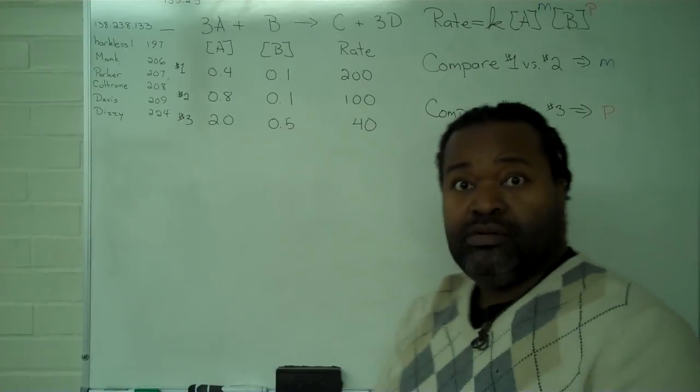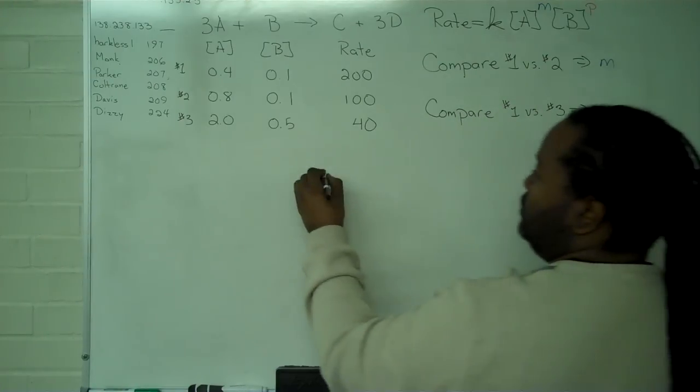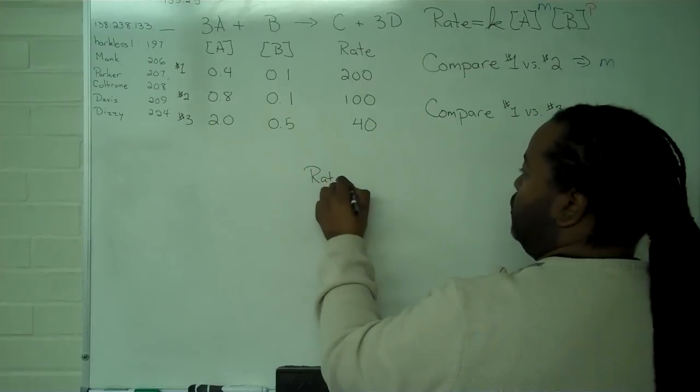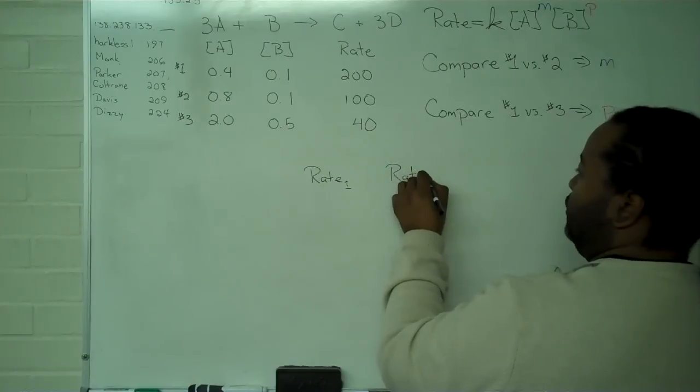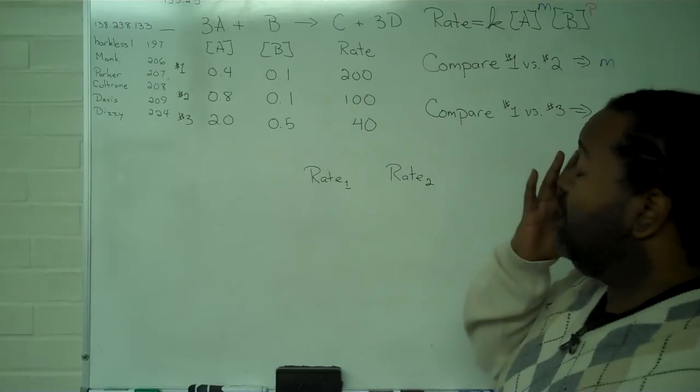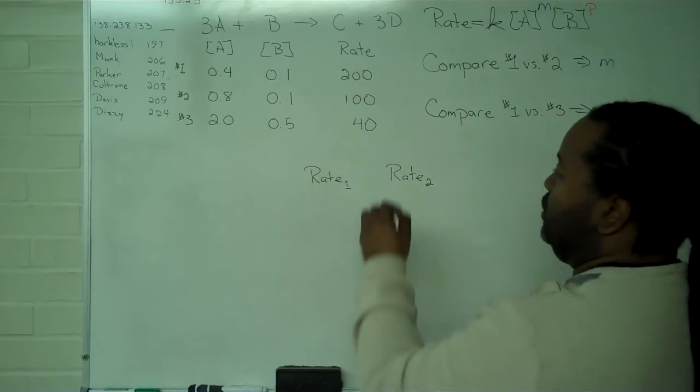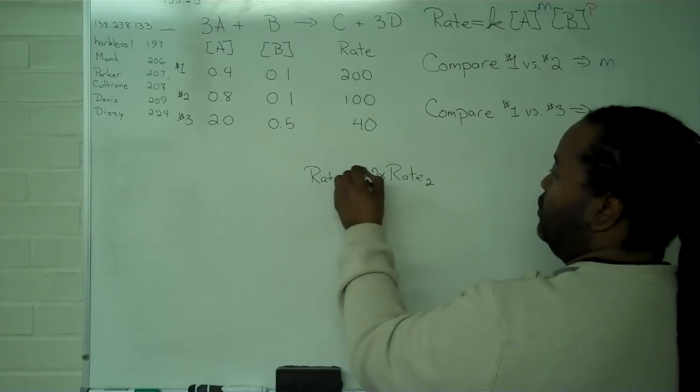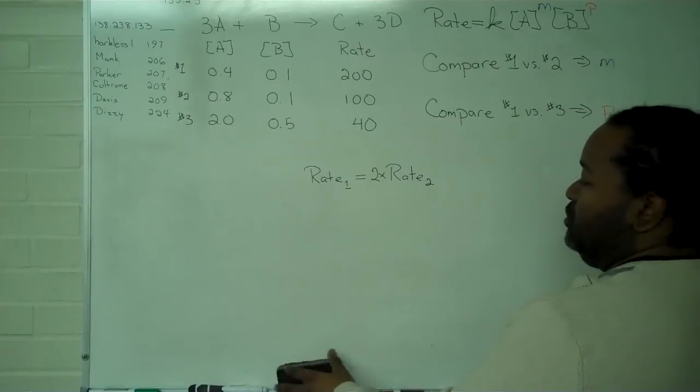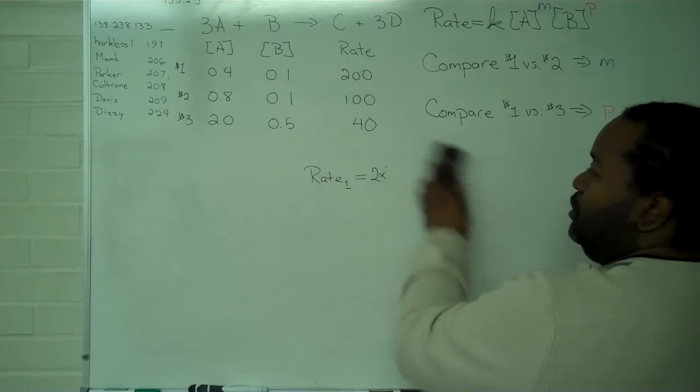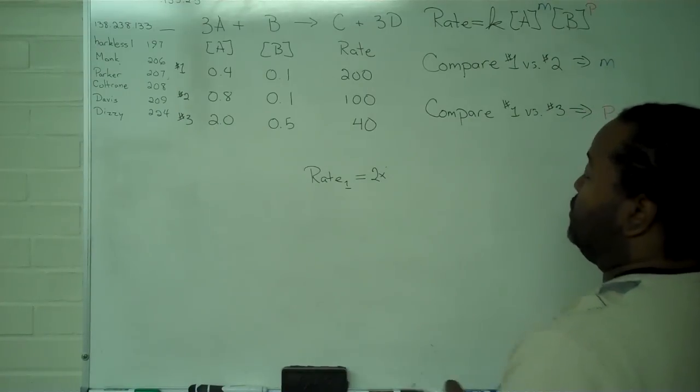We start out by taking one versus two. We want to look at what the rate is for one and its relationship to the rate for number two. What we find is that rate one is going to be equal to two times rate number two. Once we have that equality, we can substitute in the expression for rate two.